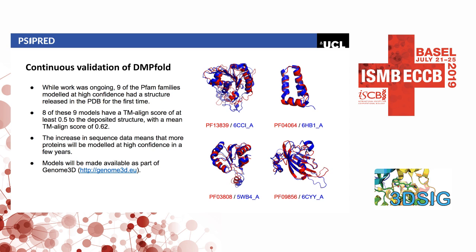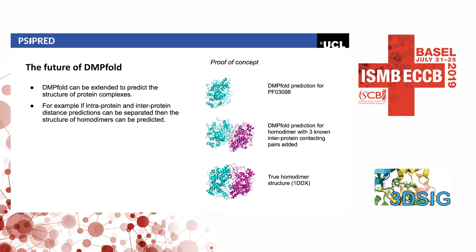While this work was ongoing, 9 of the Pfam families we modeled had structures deposited in the PDB for the first time. Of these nine, eight had a TM-score of at least 0.5 between our model and the deposited structure. We could use the continual PDB release to validate DMPfold even more, and actually if we reran the method in two years we would find we can model more simply because of the huge sequence explosion — more and more sequences coming in. We intend to keep it updated and make it available as part of Genome3D.